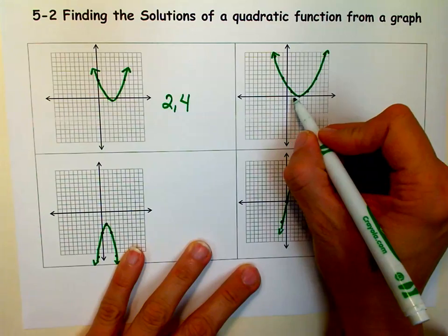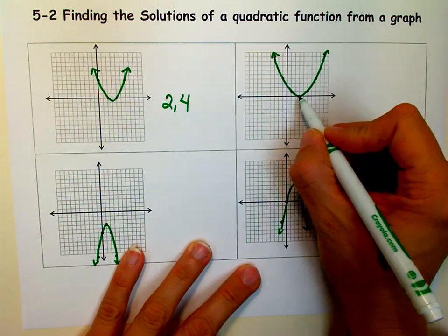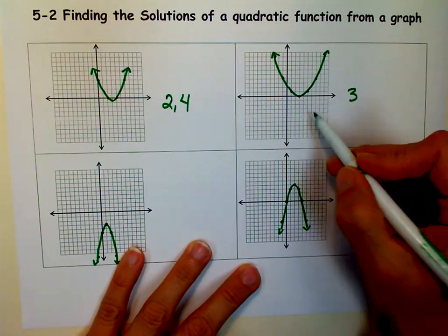Over here, it just crosses once. It crosses right there at 3, so our solutions to this graph are 3.